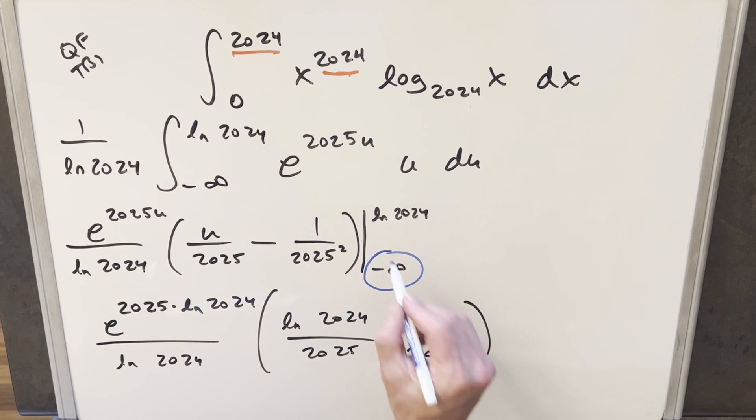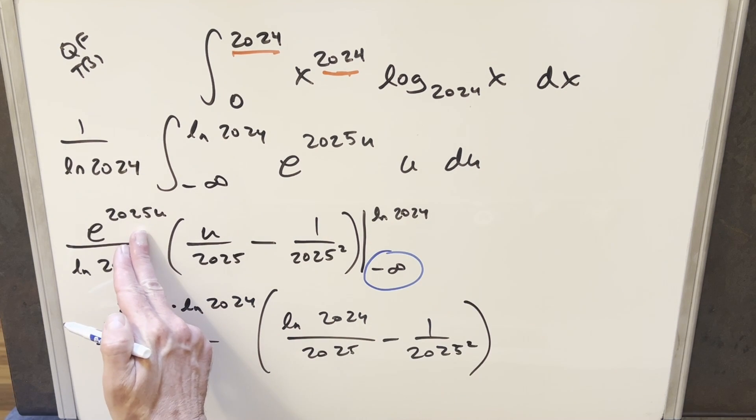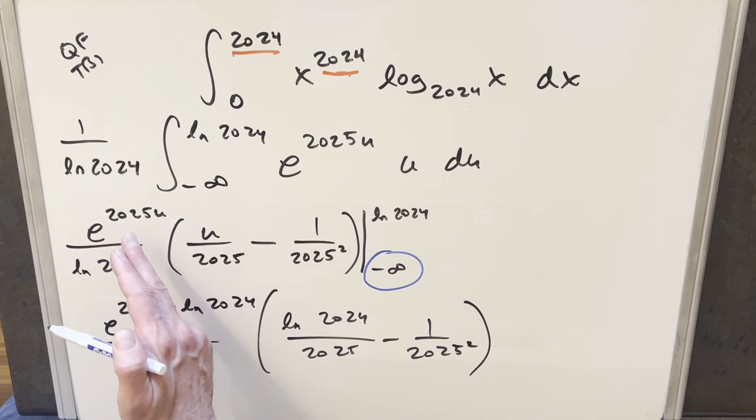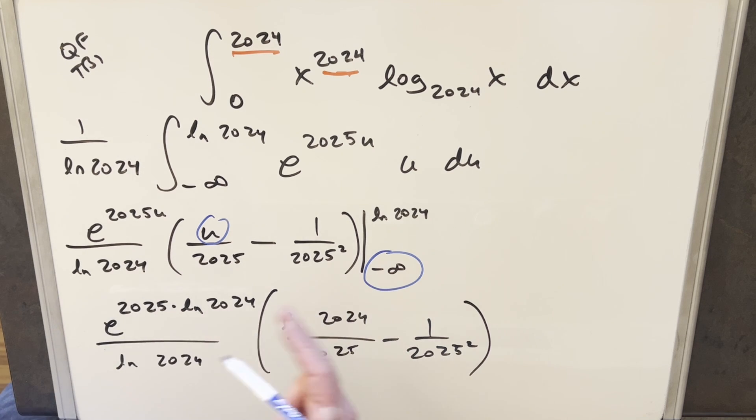But now for minus infinity, the thing here is we're plugging it in the exponential. So what's going to happen when we evaluate this at minus infinity, we put it in the exponent of the exponential. Well, we're also putting it in here. But the exponential is so much more powerful. When we plug that in, the whole thing is going to zero. So I'm just going to leave that off entirely.